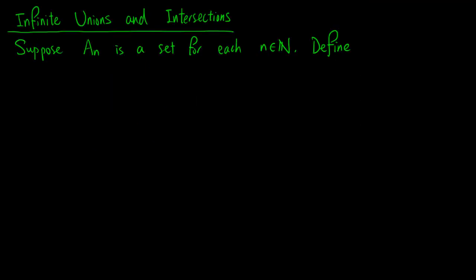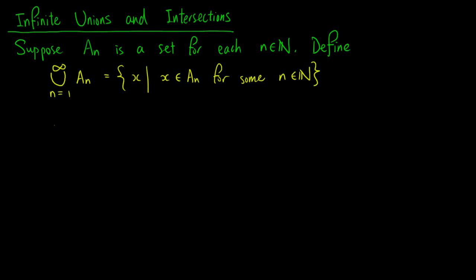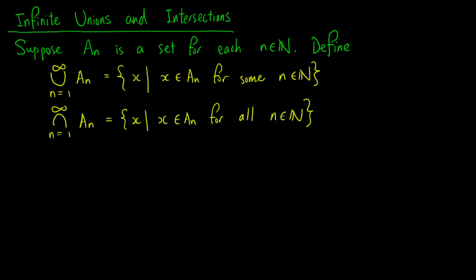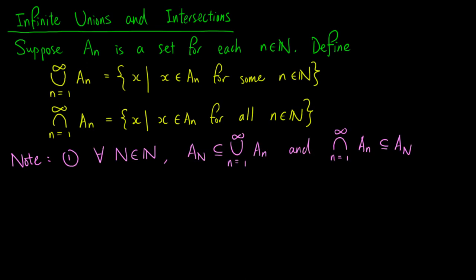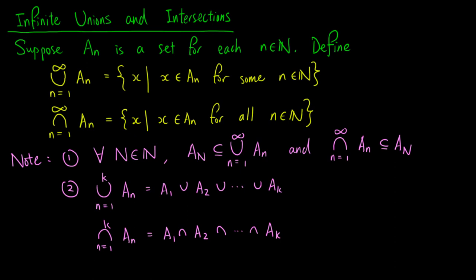Now, we introduce the notion of infinite unions and intersections. Suppose a_n is a set for every positive integer n. We define the infinite union of the a_n's as the set of x such that x is in a_n for some positive integer n. Here, we only require that x is in at least one of the sets a_n, but it can be in many of them. We also define the infinite intersection of the a_n's as the set of x such that x is in a_n for every positive integer n. Note that by definition, a_n is a subset of the infinite union of the a_n's, and the infinite intersection of the a_n's is a subset of a_n for every positive integer n. If we want to consider a finite union or intersection, we may replace infinity by a variable k, to mean the union or intersection of the sets a_1 up to a_k. This notation works in exactly the same way as the summation notation.